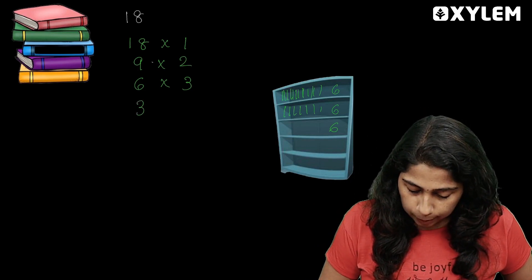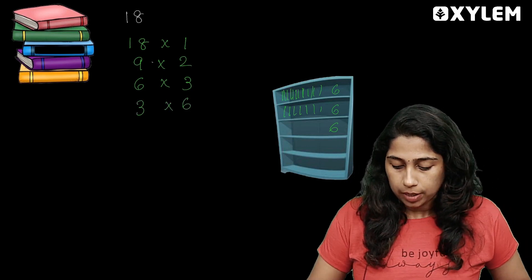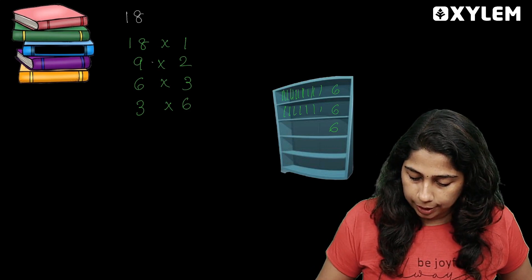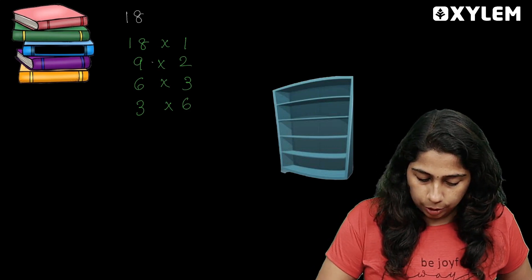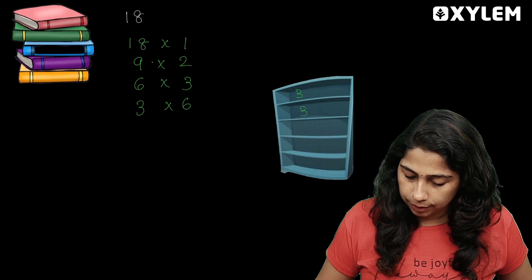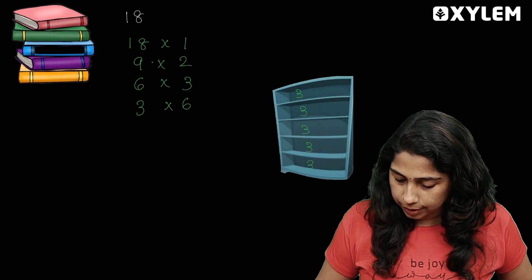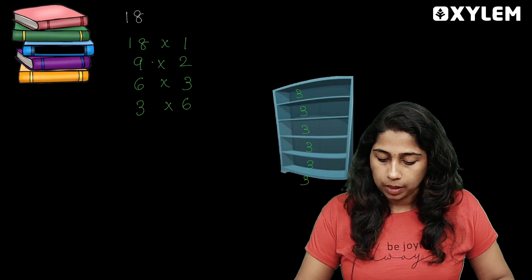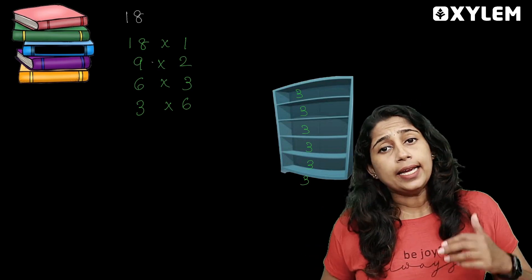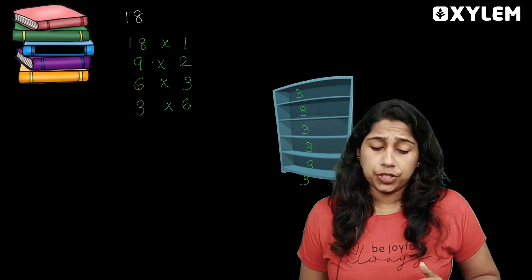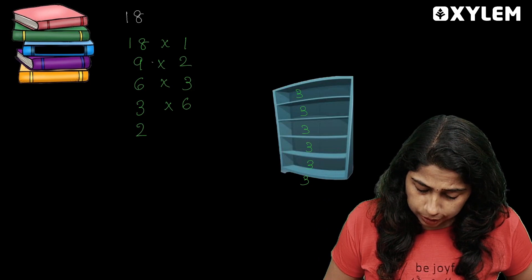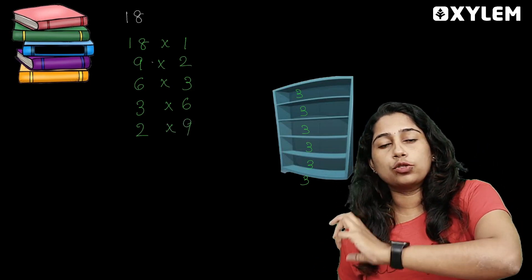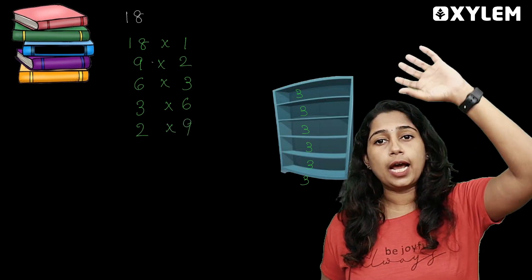You put 3 books on each of 6 shelves. 3 books here, 3 books here, 3 books here — one shelf, three books. How many in total? Eighteen books. Now, 2 books each means 9 shelves.